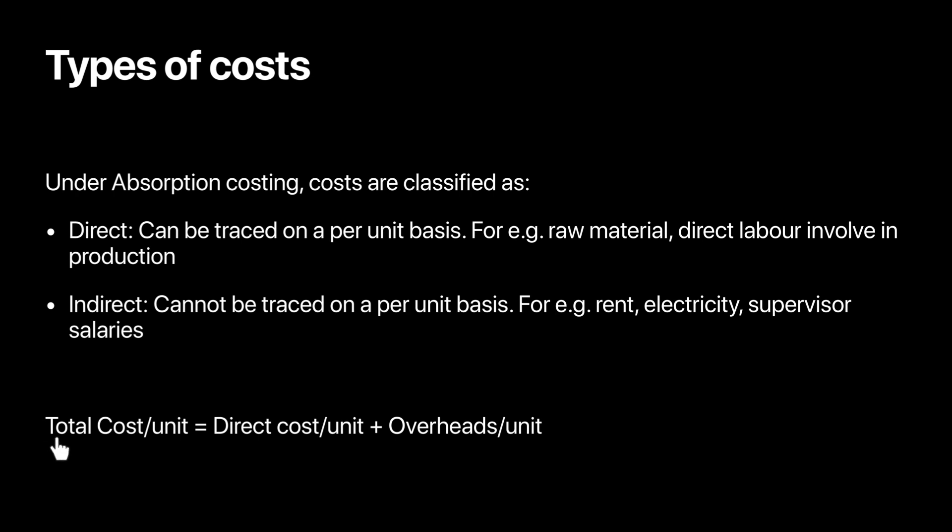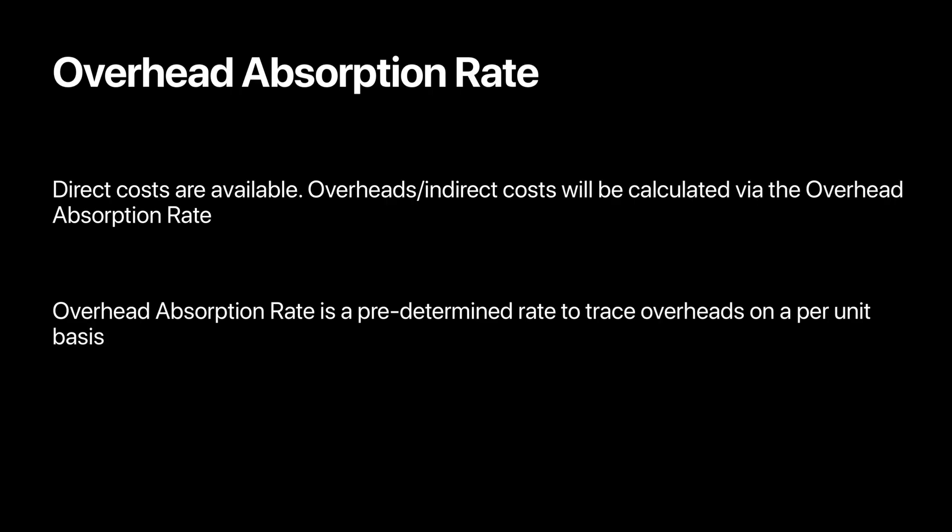Absorption costing says that the total cost per unit should be made up of direct cost per unit plus overheads or indirect cost per unit. Firms can calculate direct cost per unit — such as raw material and labor cost per unit — but what's not available is how to calculate overheads on a per unit basis. Managers would not know rent per unit, electricity per unit, or supervisor salary per unit. That is something managers have to calculate.